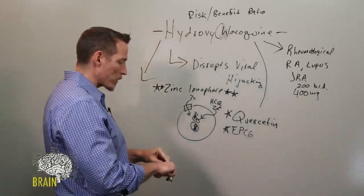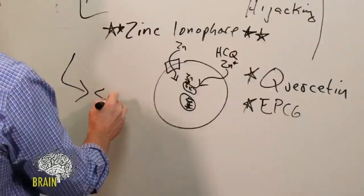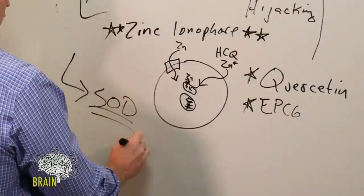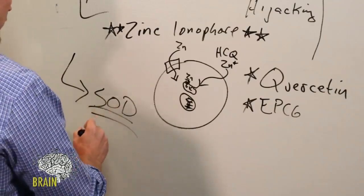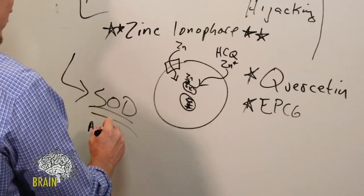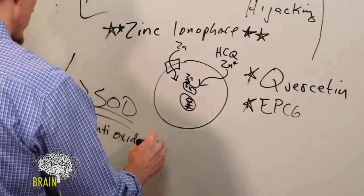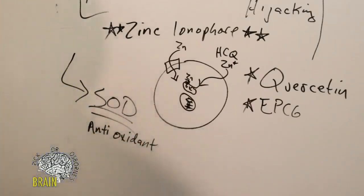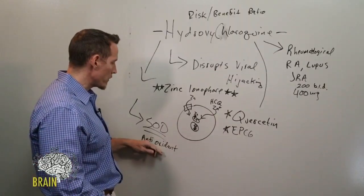One of those is an enzyme system called SOD. SOD is an enzyme called superoxide dismutase, a very potent, very powerful antioxidant. One of the things that happens with viral infection is free radical buildup and damage to tissues. The more you have antioxidants to protect you, the more solid your antioxidant status, the less risk for potential complications.